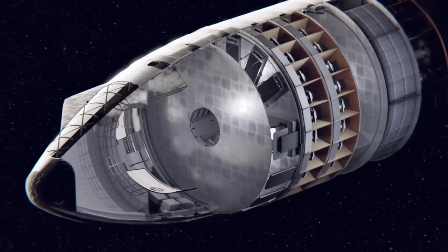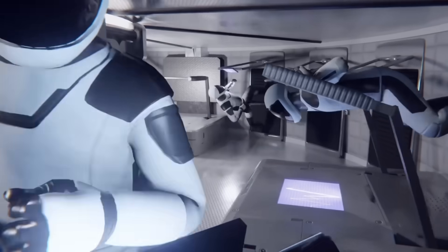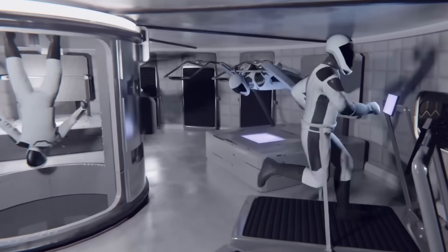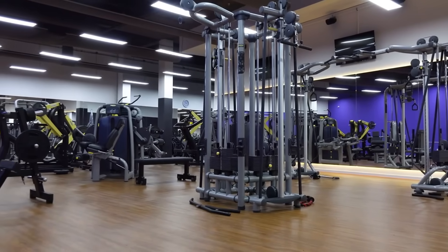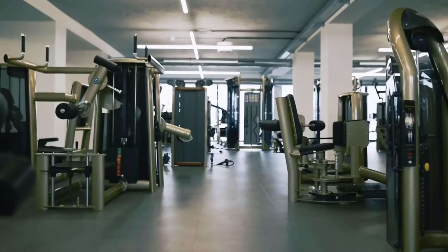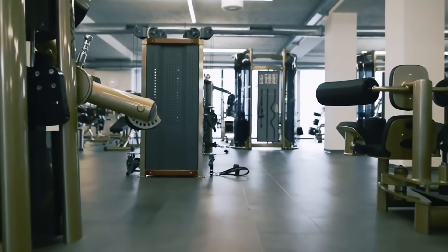The third floor reveals SpaceX's commitment to long-term human well-being. A complete exercise facility ensures astronauts can maintain their strength against the degrading effects of zero gravity. The equipment here isn't just copied from Earth. It's reimagined for space.